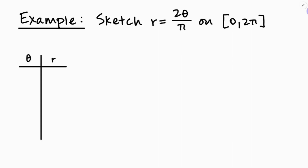Going from 0 to 2 pi, let's just think about the big stops on the unit circle: 0, pi over 2, pi, 3 pi over 2, and 2 pi. When we plug in theta equals 0, r equals 0. Plugging in pi over 2, we double it to get pi, then divide by pi, giving r equals 1. Plugging in pi gives r equals 2, and I can see the pattern — it's going to be 3 and 4.